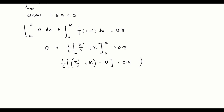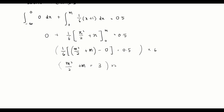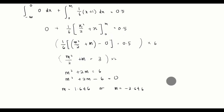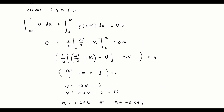Multiplying both sides by 6 gives m²/2 + m = 3. Multiplying by 2 gives m² + 2m = 6, or m² + 2m − 6 = 0. Solving this quadratic equation gives m = 1.646 or m = −3.646.